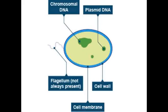Bacteria, on the other hand, are single celled, so this cell is a whole individual organism. Bacteria are far smaller than plant or animal cells — so small in fact that there's no space for organelles like a nucleus or mitochondria. This means the DNA in a bacteria cell is loose within the cell and not inside a nucleus. Most of the DNA is in a single large piece called chromosomal DNA, which does the same job as the DNA stored in the nucleus inside a plant or animal cell.